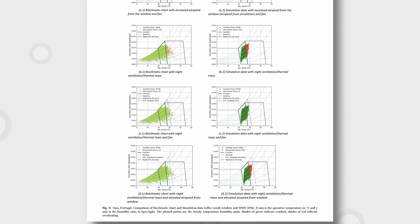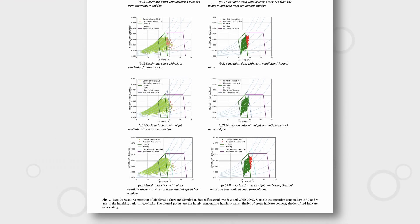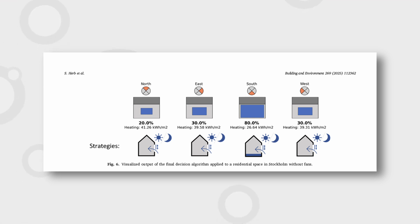eCompass, on the other hand, provides specific design recommendations by simulating a range of scenarios. It can identify the maximum allowable window-to-wall ratio for different wall orientations and suggests the best passive design strategies like thermal mass, shading, and night ventilation.